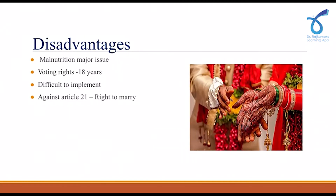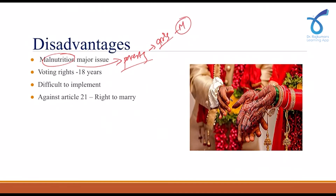However, there are certain disadvantages of the bill. Is malnutrition the major issue for girls who are married early, or is there another cause? The answer is poverty. Parents of girls who are poor want to reduce their burden, which is why girls are married at an early stage. So the root cause of malnutrition is poverty, not marriage itself.